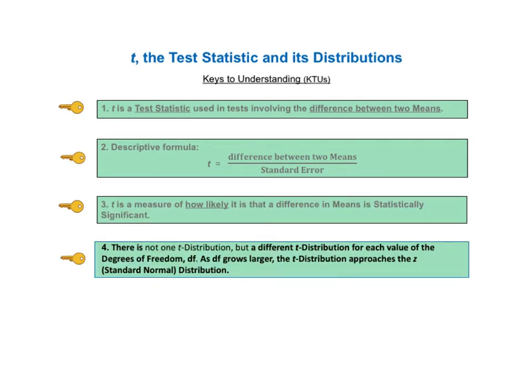Key to understanding number 4 says there is not just one T distribution, but there is a different T distribution for each value of the degrees of freedom, DF. As DF grows larger, the T distribution approaches the Z, the standard normal distribution.